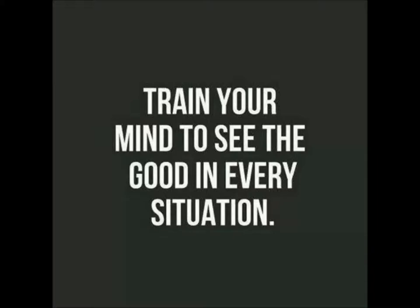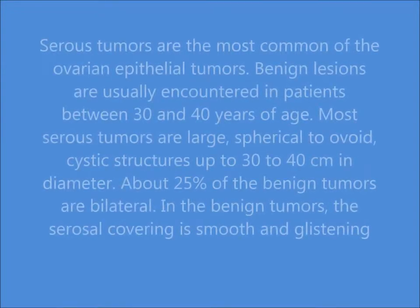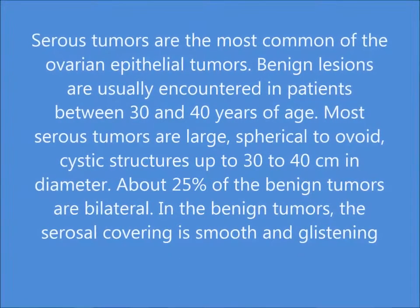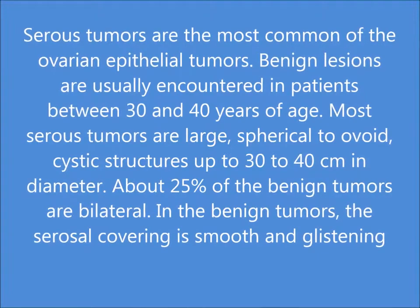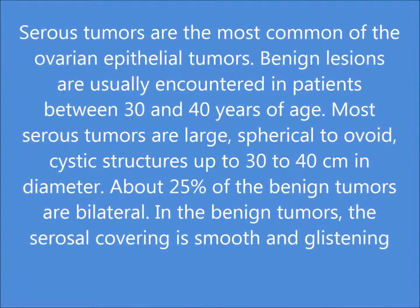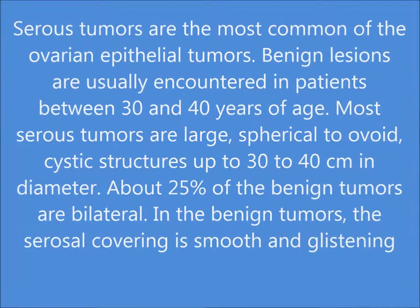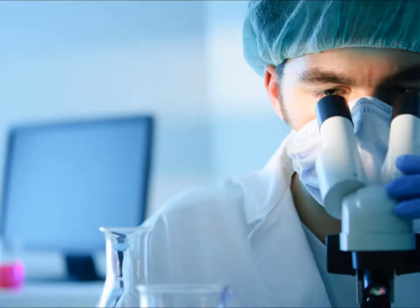Serous tumors are the most common benign lesions of the ovaries. They usually present in patients between the ages of 30 and 40 years. Most tumors are large, spherical to ovoid cystic structures, up to 30 to 40 centimeters in diameter, with a smooth, shiny, and glistening outer surface.